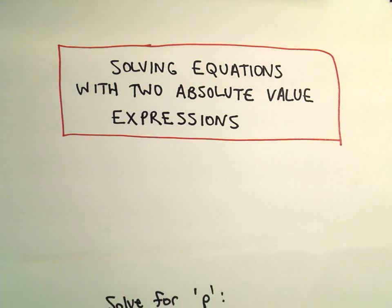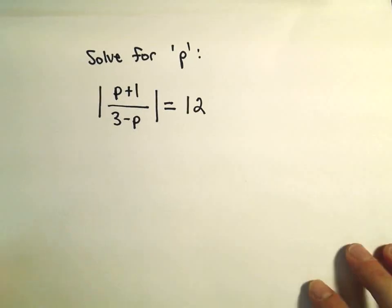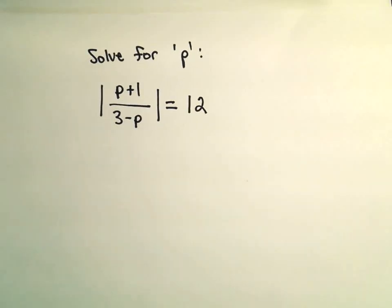At first it's not going to look like there's two, but wait just a second here. Suppose we have the absolute value of the fraction p plus 1 divided by 3 minus p equals 12.